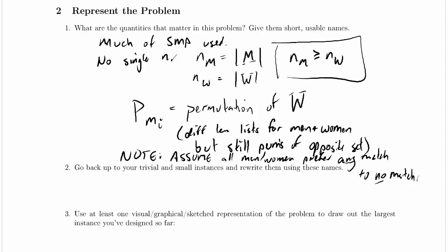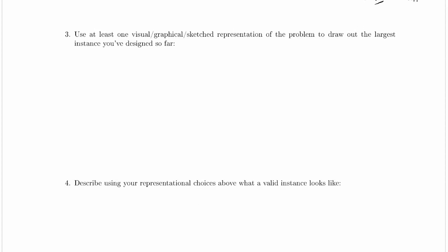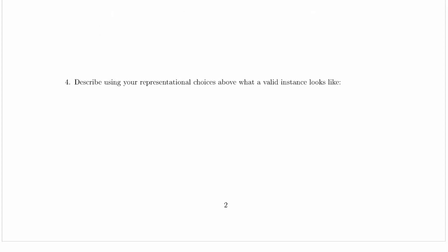Otherwise this is going to be about the same as SMP. Let's go ahead and write it down. So what does a valid instance look like? It looks like NM and NW, let's say values, well let's be even more specific,